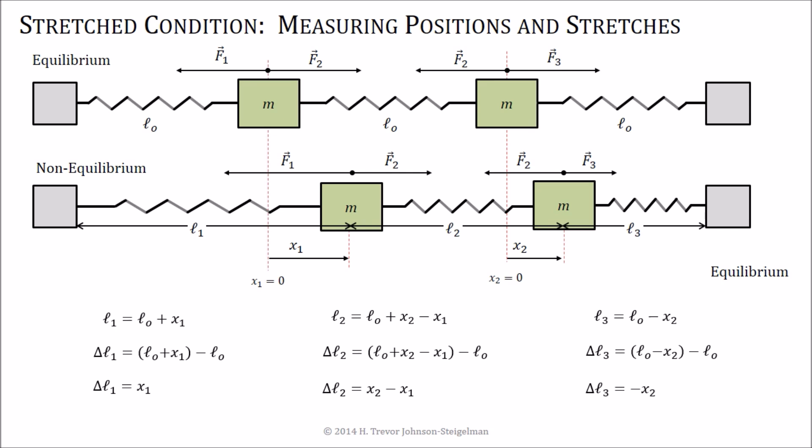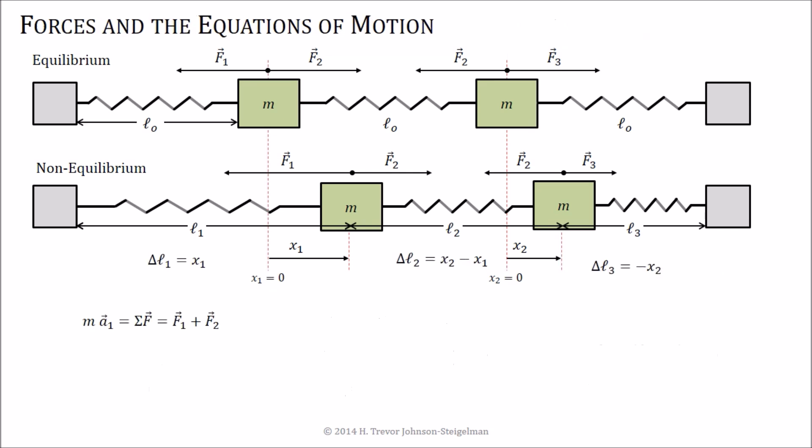Now let's look at the equations of motion. The forces are going to be F1 and F2 acting on M1, and they're going to be determined by spring 1 and spring 2. And F1 is always pointing in the negative direction. F2 is always pointing in the positive direction, at least on this particular object. So we can go from our vector equation to our algebra equation.